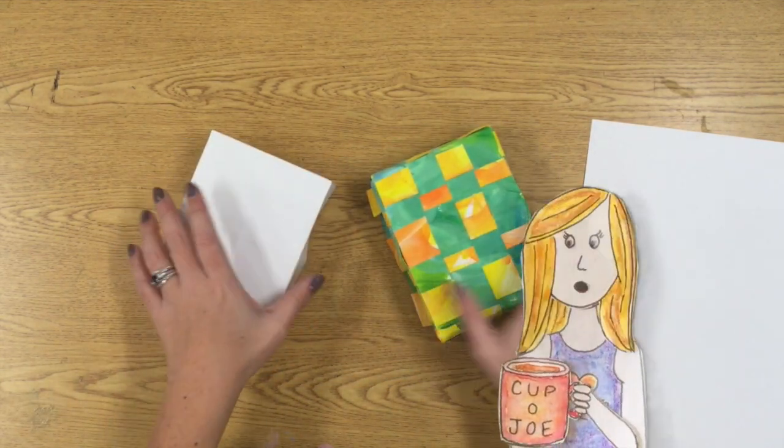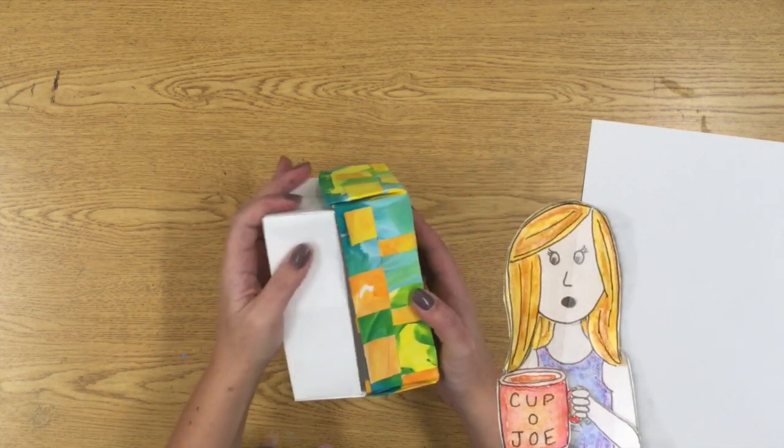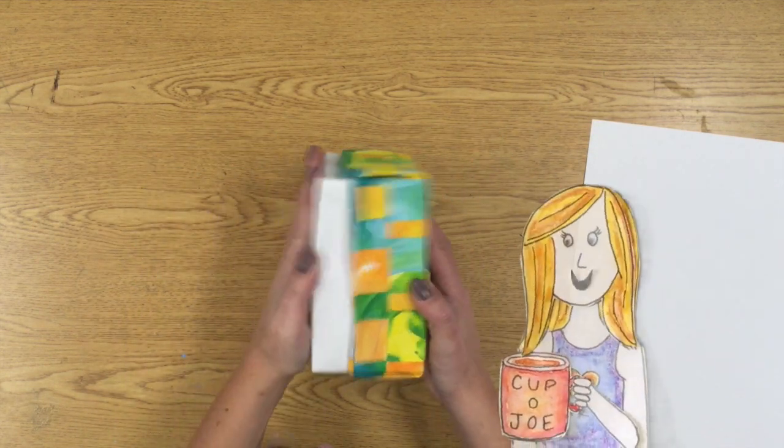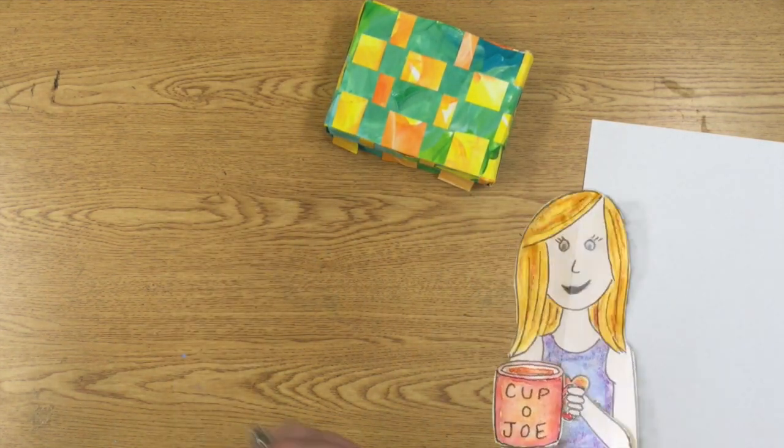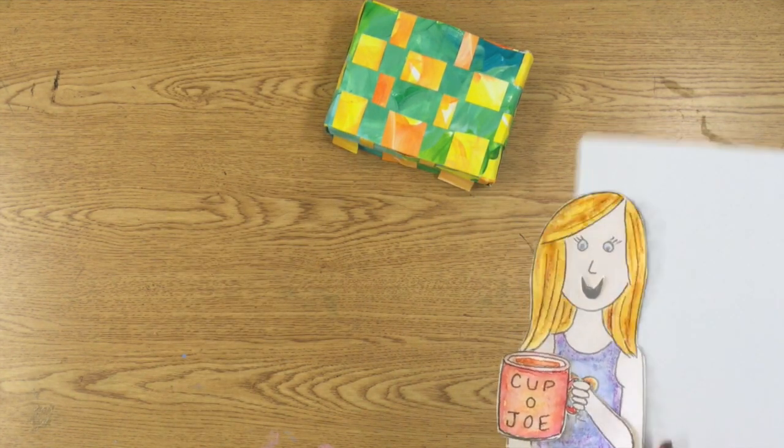You're obviously going to need two pieces of paper and it's kind of a good idea to practice on your second piece first. So we're going to save the weaving and we're going to practice with the piece that's going to become the bottom of the box.